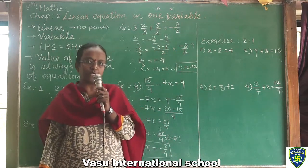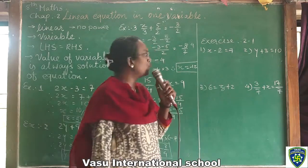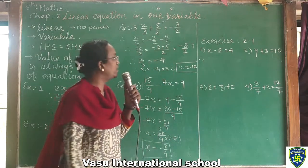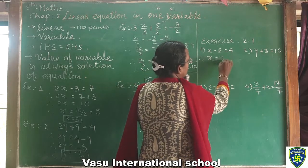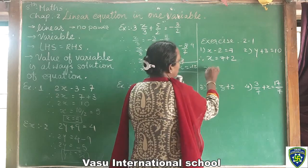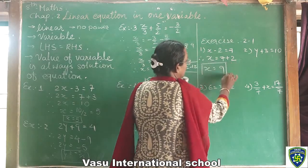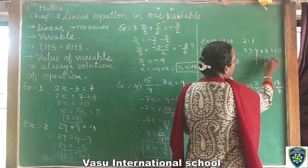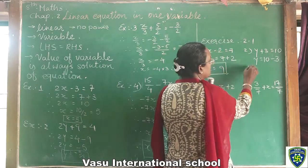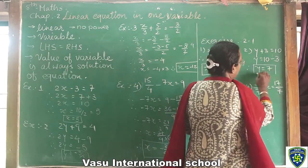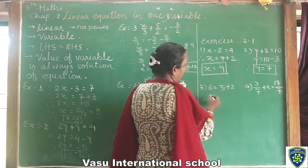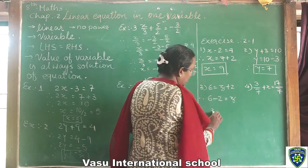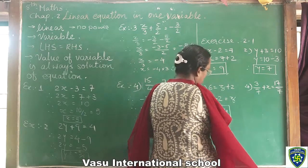These are the examples given in your textbook. Now we will start Exercise 2.1. The first sum is very easy: x minus 2 equal to 7. So x equal to 7, and minus 2 changes side to plus 2, giving x equal to 9. Second question: y plus 3 equal to 10 gives y equal to 10, and plus 3 changes side to minus 3, so y equal to 7. Third sum: 6 equal to z plus 2, so 6 minus 2 equal to z, therefore z equal to 4.